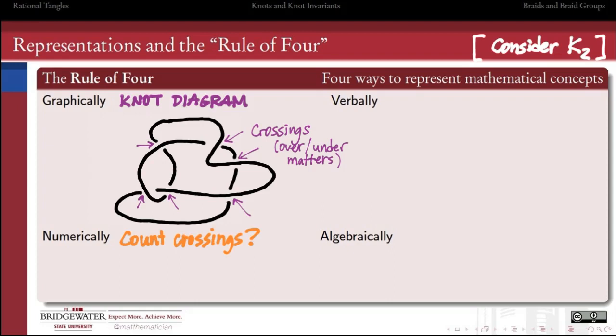We could also assign a number to this knot. One way of doing that would just be to count the number of crossings that we see. If we go through and count 1, 2, 3, 4, 5, 6, we get a number that we call the crossing number of this diagram. This knot diagram has six crossings in it. That's one way to represent this knot with a number. Whether it's a great representation or not remains to be seen.